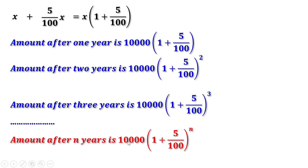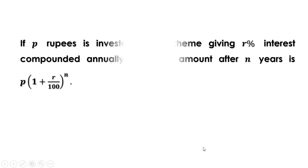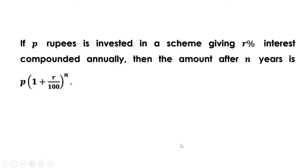Here 10,000 is the principal, denoted by P, and 5 is the rate of interest, denoted by R. So if P rupees is invested at R percent interest compounded annually, the amount after N years is P × (1 + R/100) raised to N. We can calculate the amount after a certain number of years using this formula. Now let us do some problems.